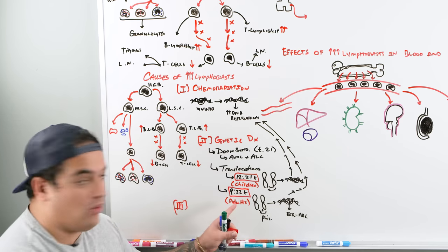Lymphoblasts depositing into lymph nodes cause lymphadenopathy — typically large, non-painful, non-tender swollen lymph nodes. This is one of the most common features of any lymphocyte-predominant leukemia and may be seen in the cervical region or elsewhere.